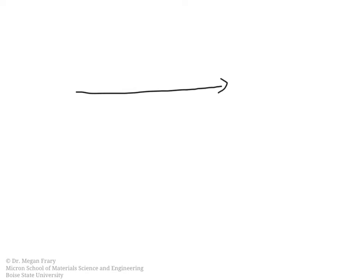So in the Mohr's circle, the coordinate system looks like this. On the x-axis, we plot the normal stress. On the y-axis, we plot the shear stress. This symbol tau is often used to represent shear stress. Just as a side note, in the stress tensor we would have called the shear stress sigma-12. That name for the shear stress still applies. Sometimes, though, we'll see it written as tau-12, and we should know that these are equivalent notations for shear stress.